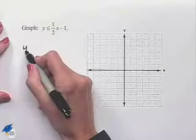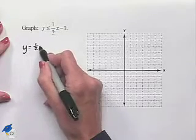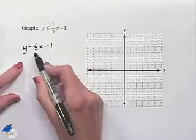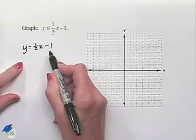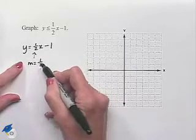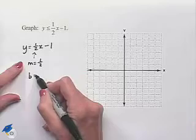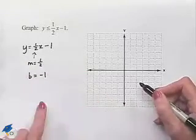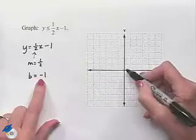We'll begin by graphing y equals one-half x minus 1. We can use the fact that this is in slope-intercept form to help us graph. We're going to identify the slope as equal to one-half, and we know that our y-intercept, which we can use the variable b for, is equal to negative 1. We'll begin by plotting the y-intercept at the value negative 1.